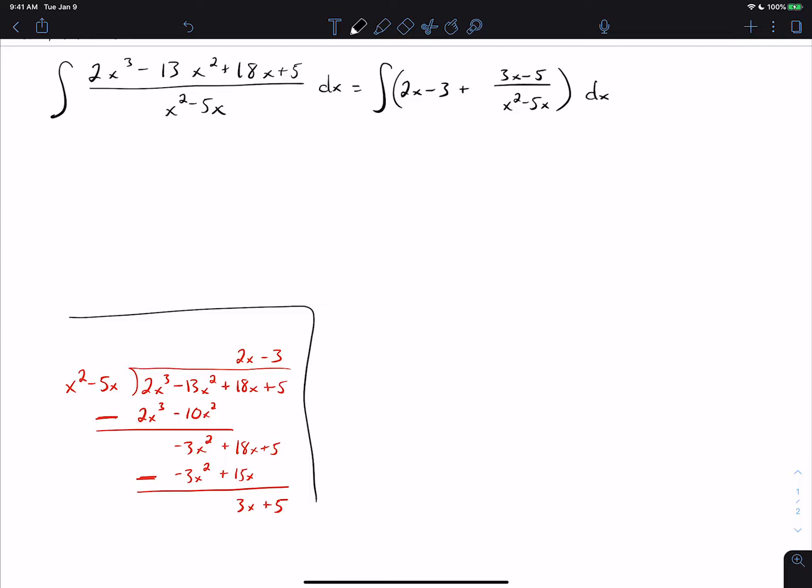Now we divide this into three separate integrals. We've got 2 integral x dx minus the integral of 3 dx plus the integral of 3x minus 5 over x squared minus 5x dx. The first two integrals are straightforward. The third integral is partial fractions.